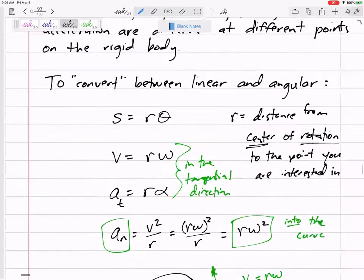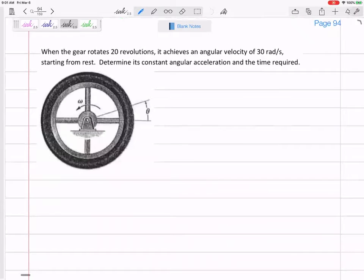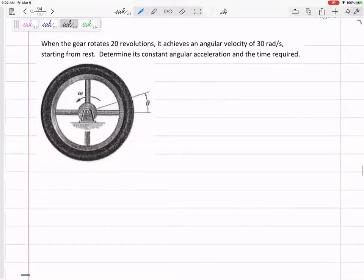So let's look at problems like this one right here. We've got this gear or wheel, and you see that it's pinned about its center, so this is pure rotation about the center. It's important to know where the center of rotation is because all of those R's, many times we're going to use that as the distance from the center of rotation. This gear rotates 20 revolutions, it achieves a final angular velocity of 30 radians per second starting from rest. Determine its constant angular acceleration and the time required.